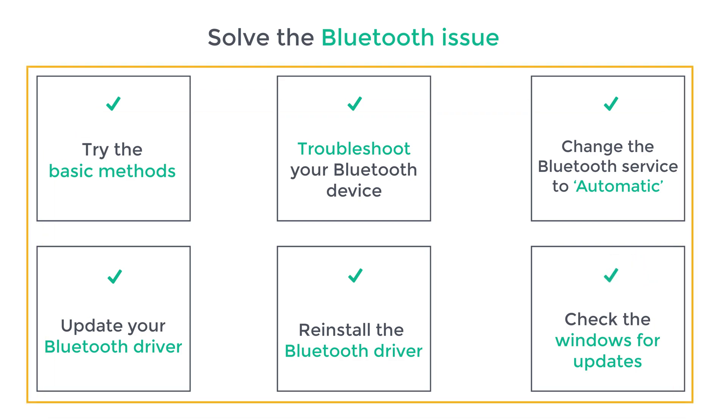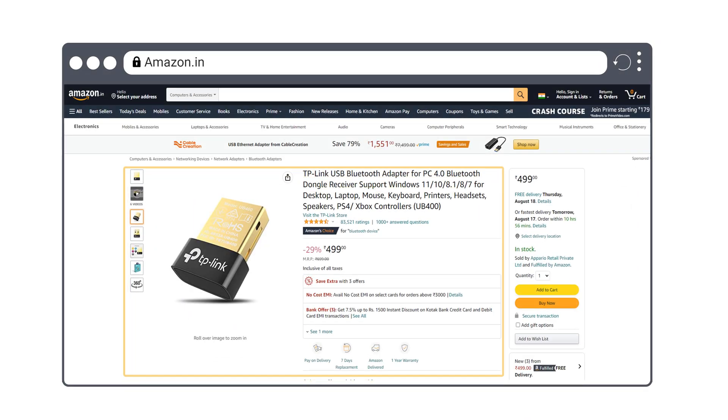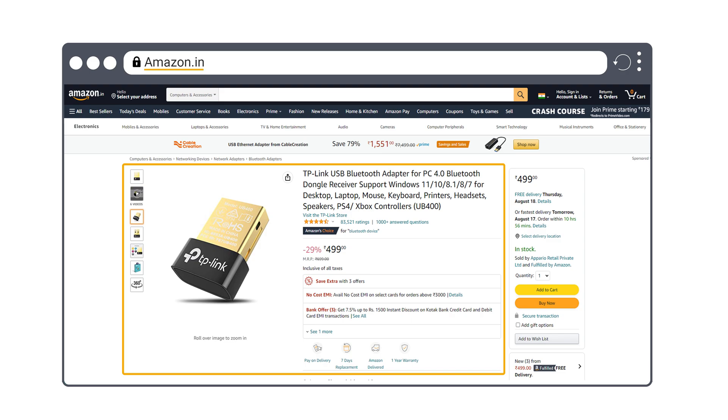If the problem exists even after all these ways, there might be some hardware damage to the Bluetooth device. To solve this issue, we recommend getting a Bluetooth adapter from Amazon — there is a link in the description. Once you have purchased the adapter, you can just plug it into your USB port and use Bluetooth on your laptop or PC.